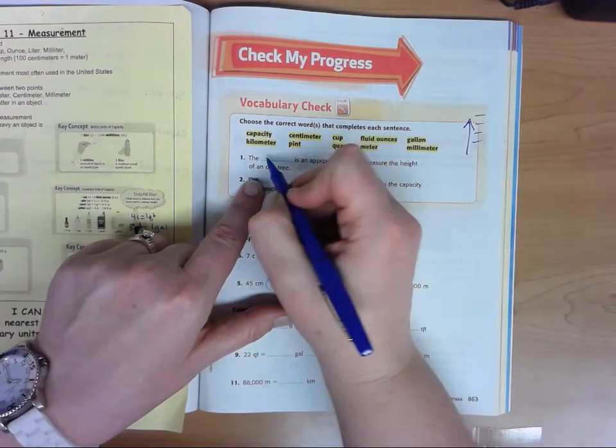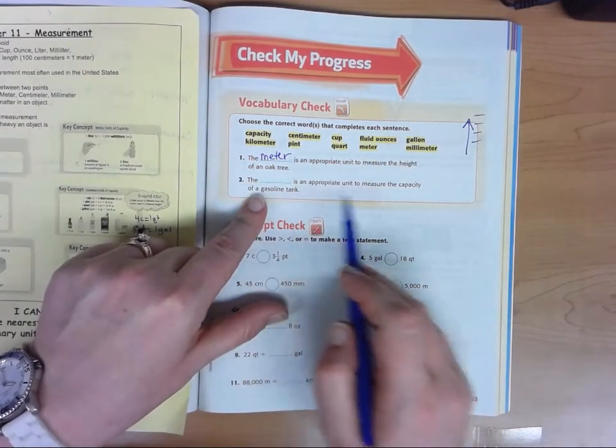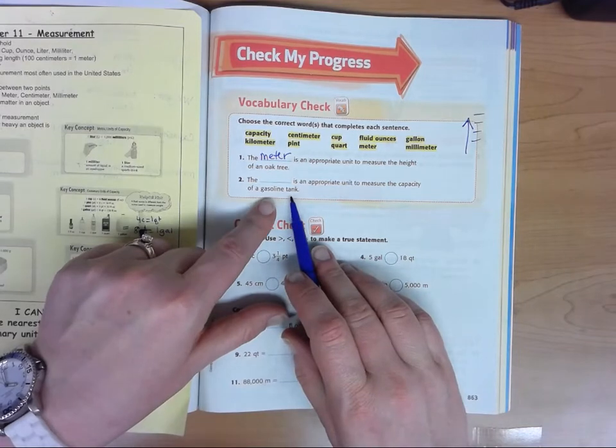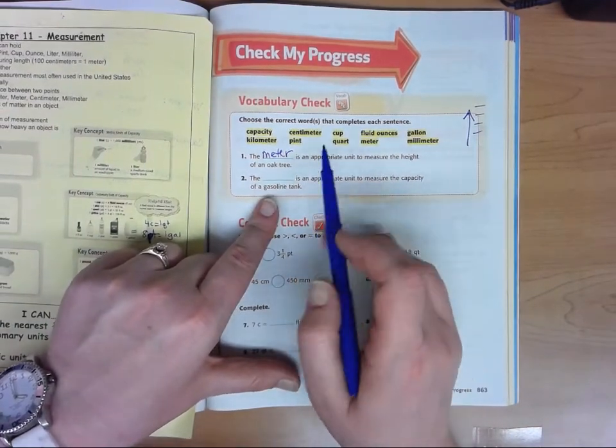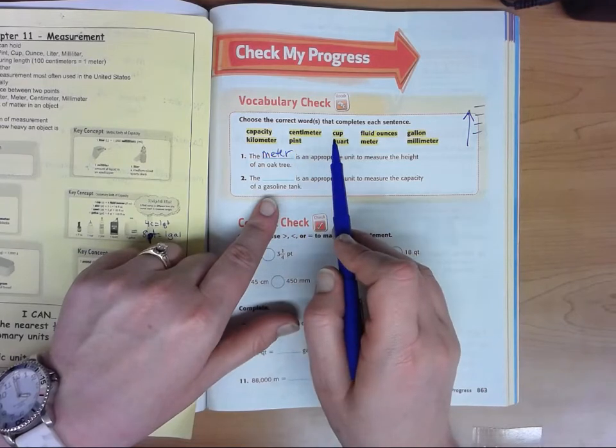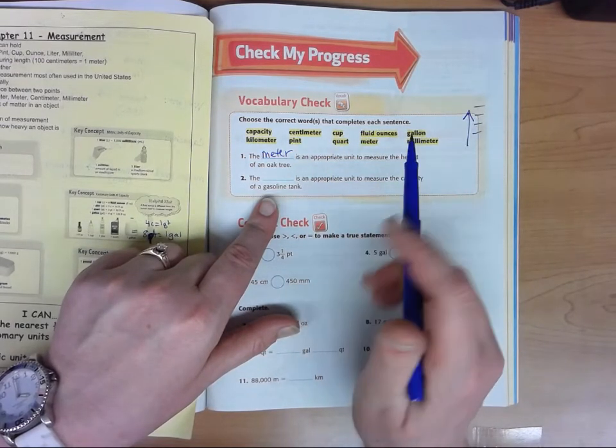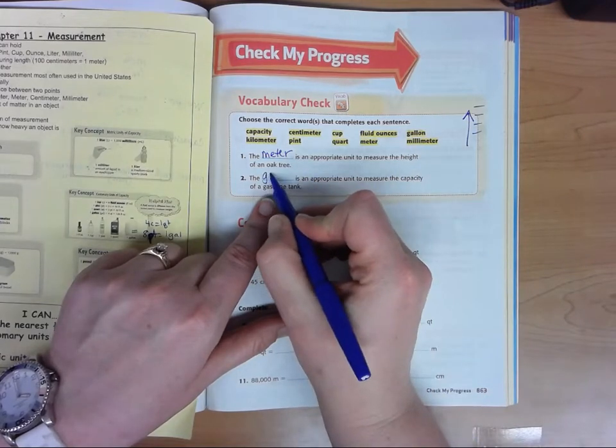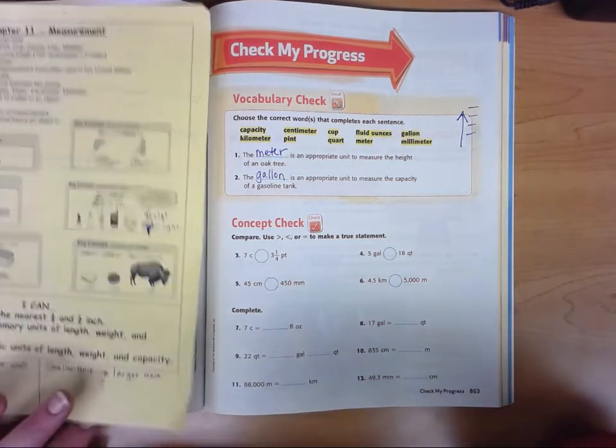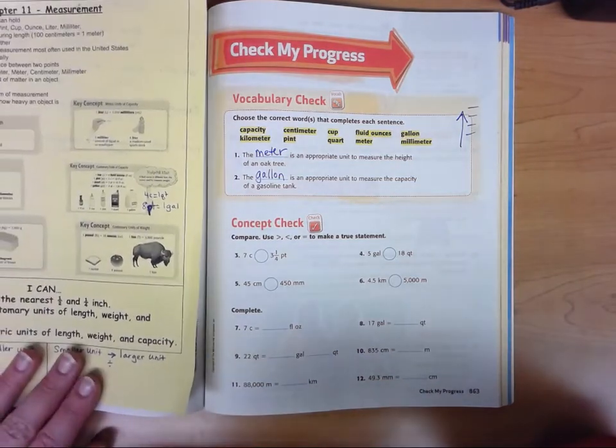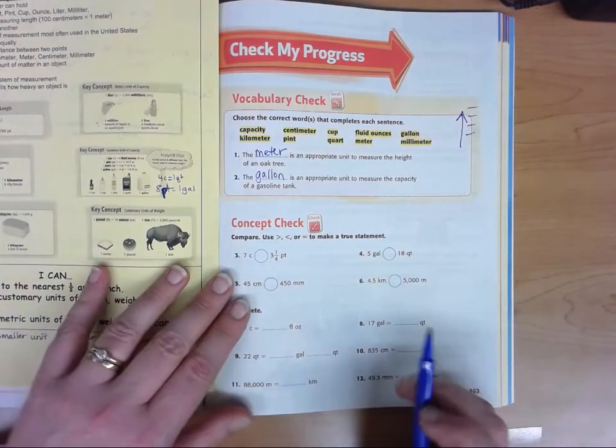So we will put meter in there. And the blank is an appropriate unit to measure the capacity of a gasoline tank. When we go to the gas station to fill up with gas, you could measure it in pints or quarts or cups or fluid ounces, which would be teeny, but we fill up and measure it in gallons. Most gas tanks can hold between 15 and 20 to 25 to 30 gallons for a larger gas tank.